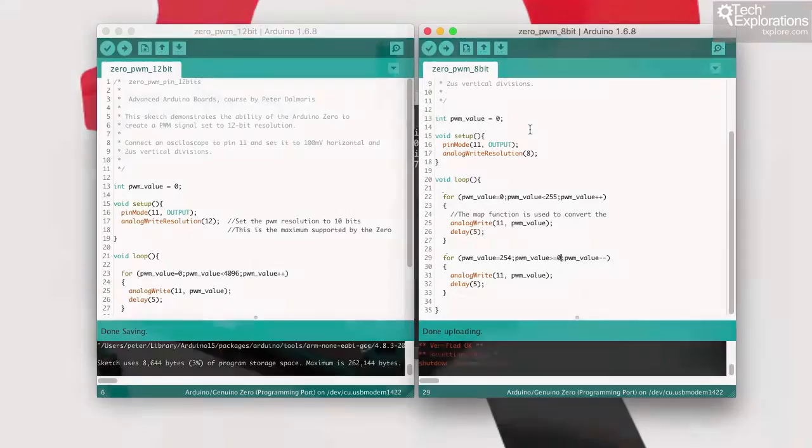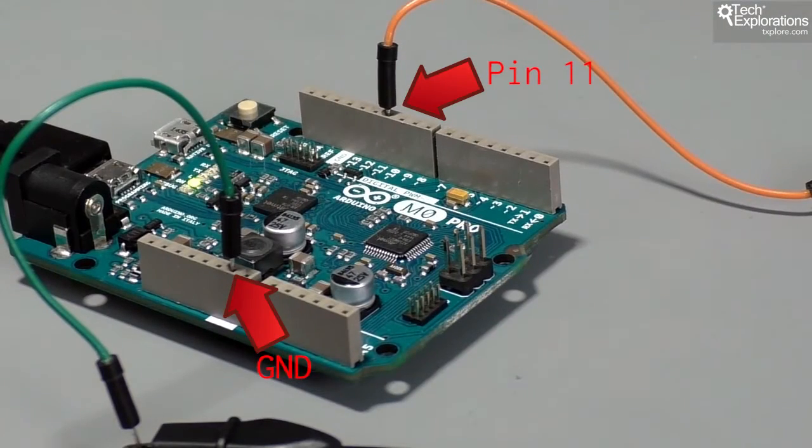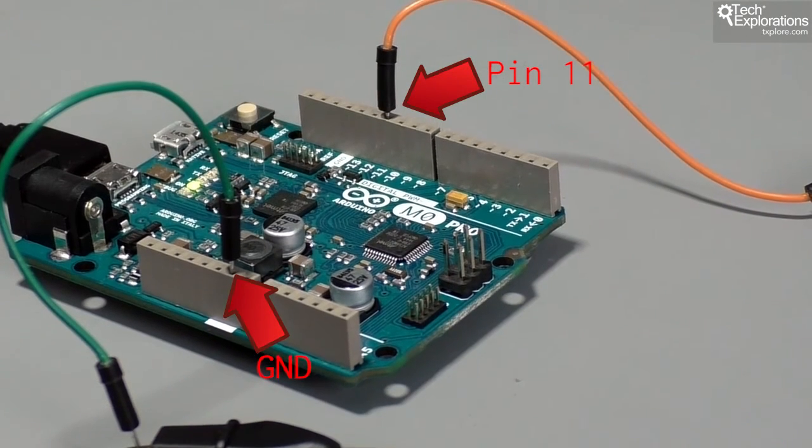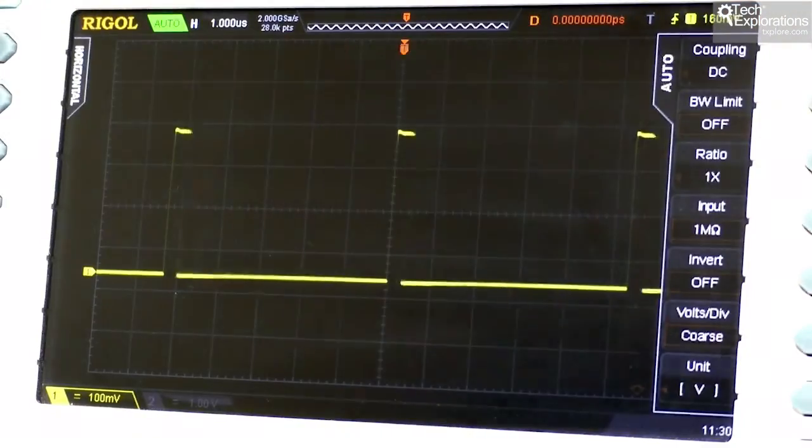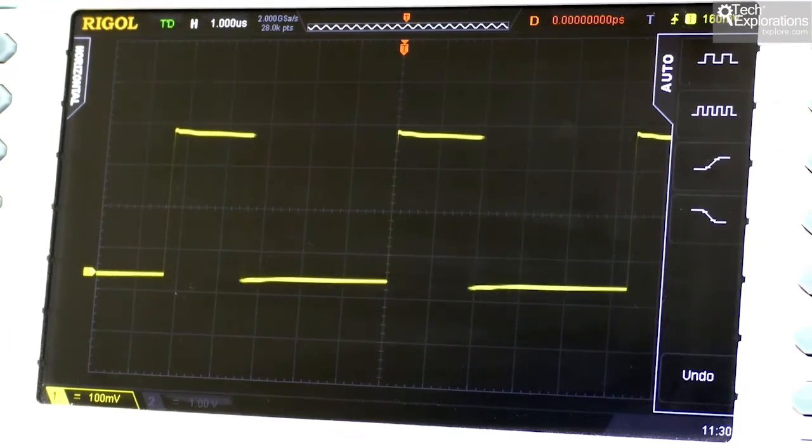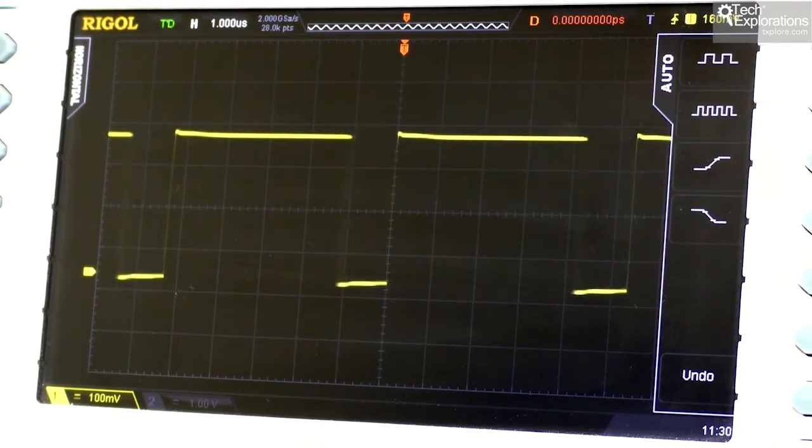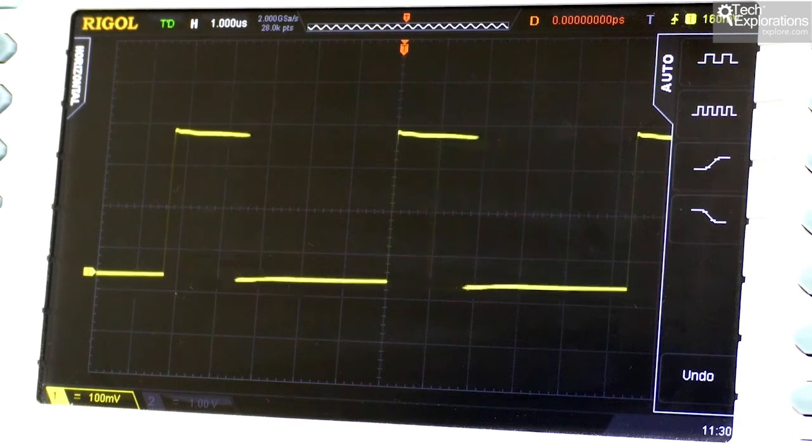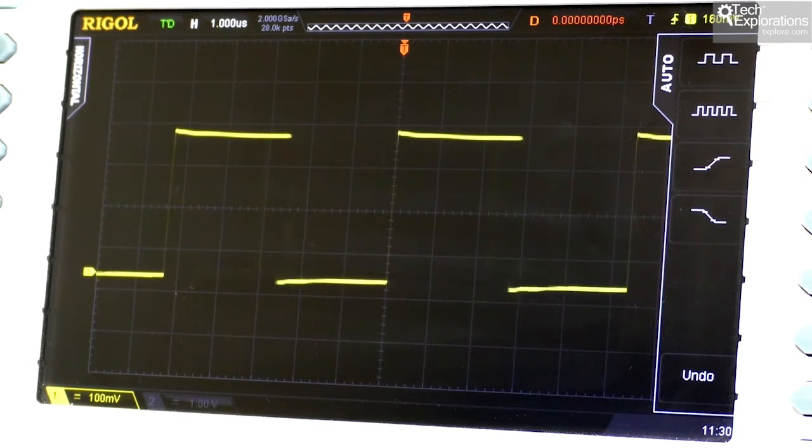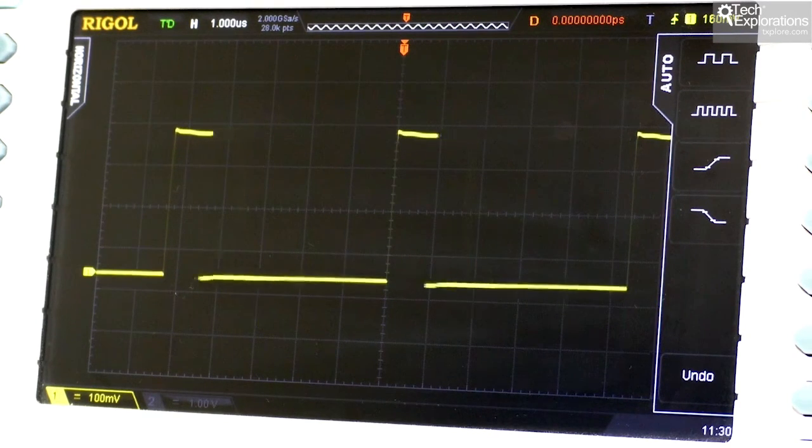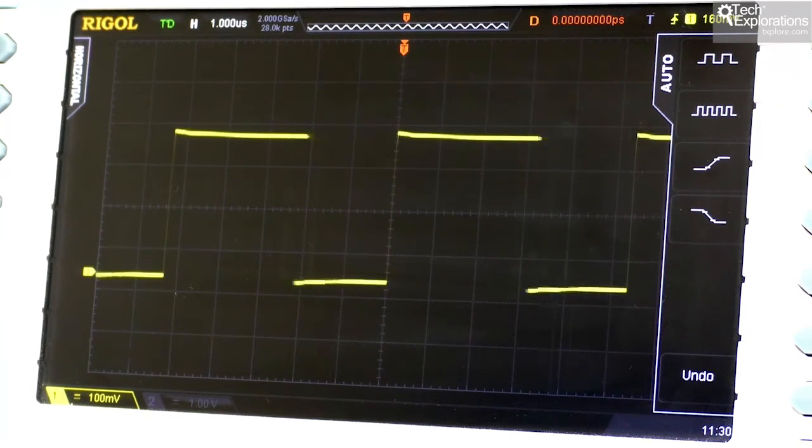I've got Arduino pin 11, the PWM pin 11, connected to my oscilloscope channel 1. I'm just going to hit auto to begin with just to get it to calibrate itself, and you can see what 8 bits looks like in PWM on the oscilloscope. It's pretty gradual - 256 individual steps by which the duty cycle increases or decreases.